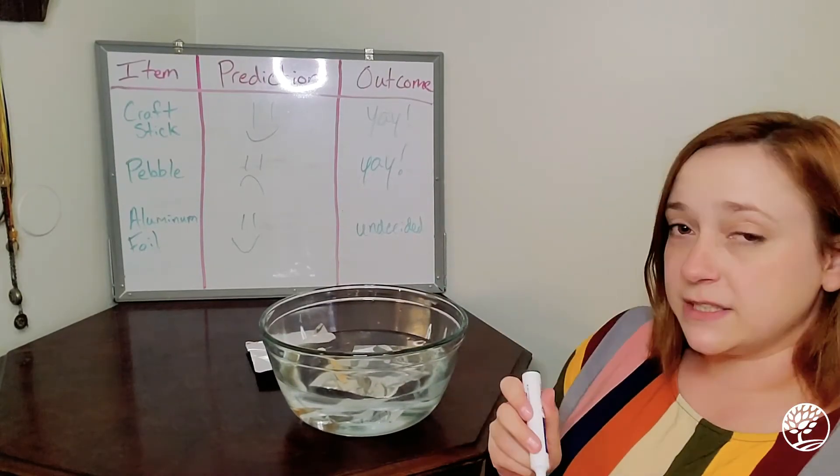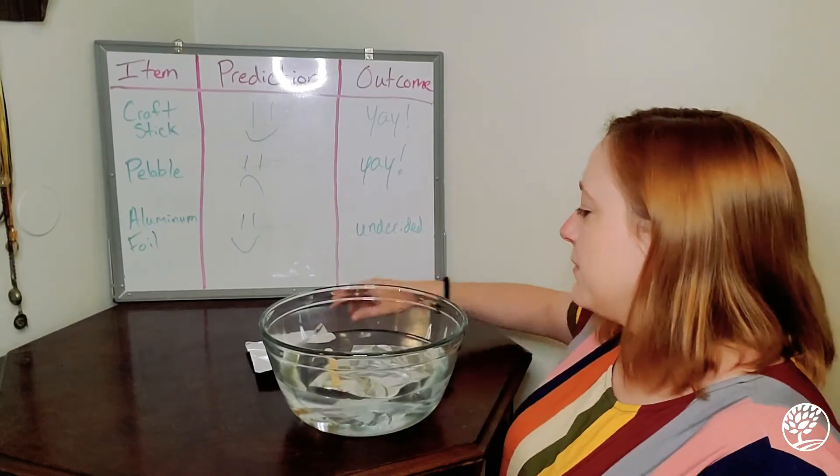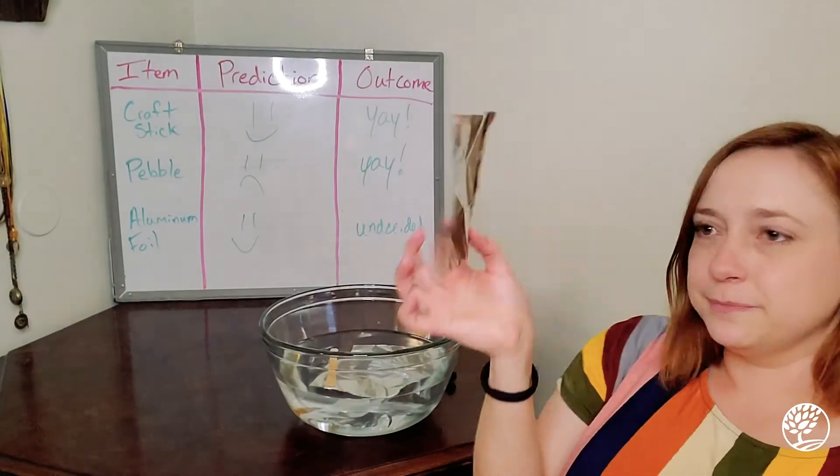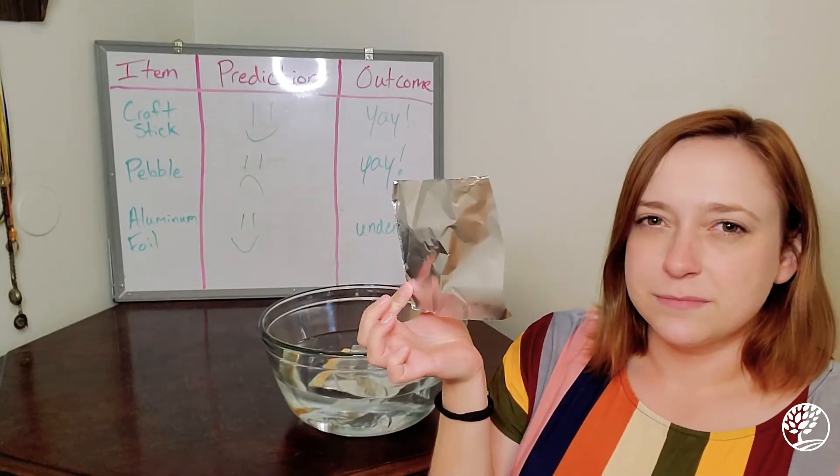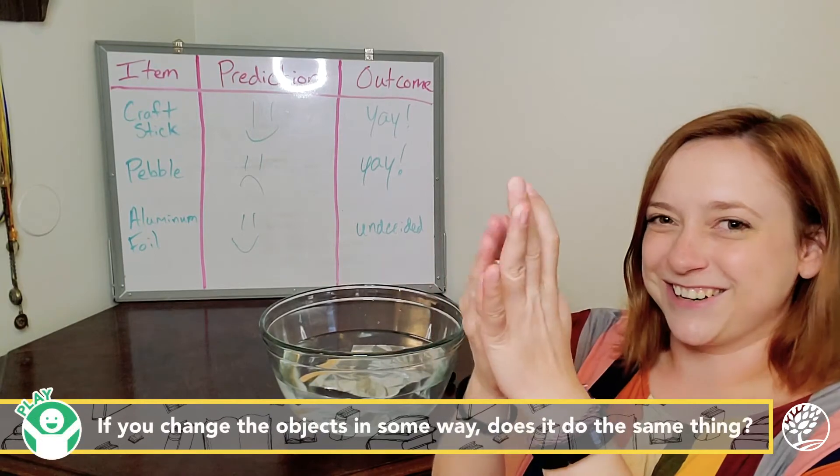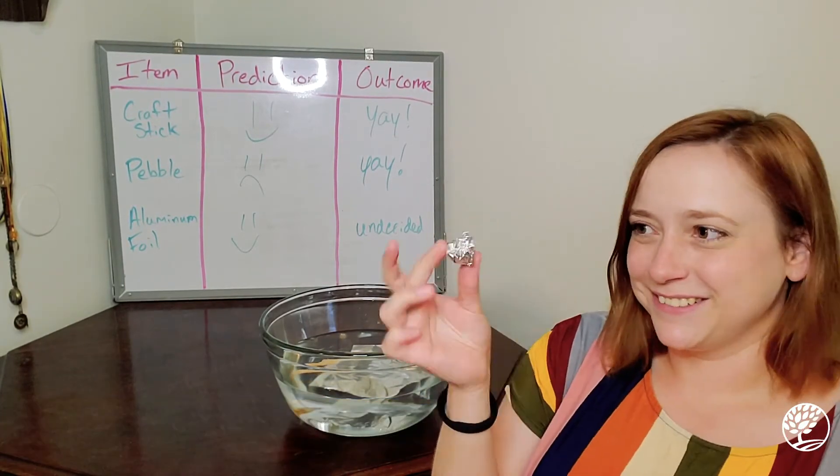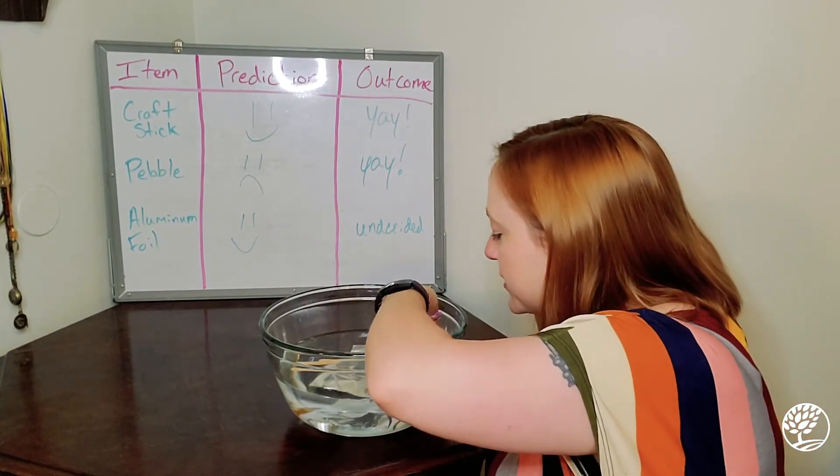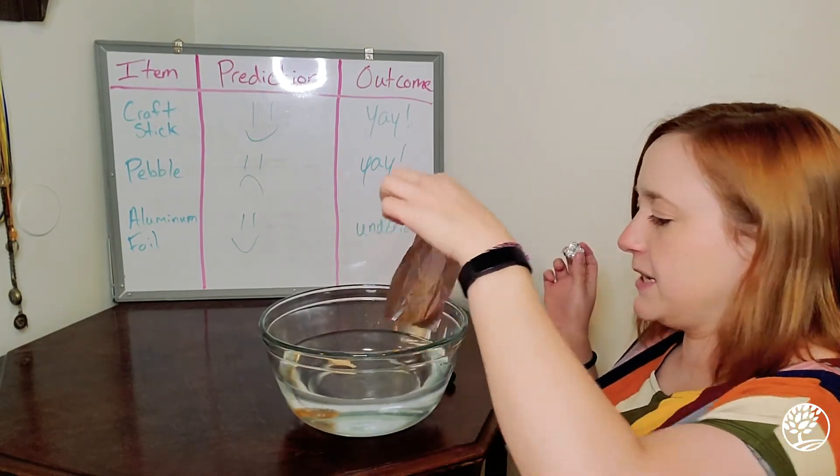Which means we might want to test even further. So I have another piece of foil here and if we change the look of it, do you think that will matter? Let's try. Let's crumple it up and see what happens when we put it in. Okay, and just so we can see perfectly, I'm going to take this other piece of foil out.